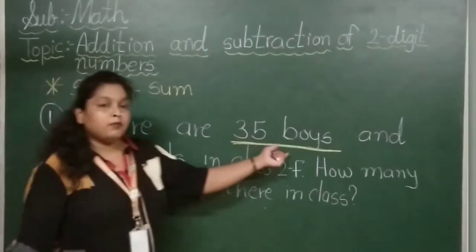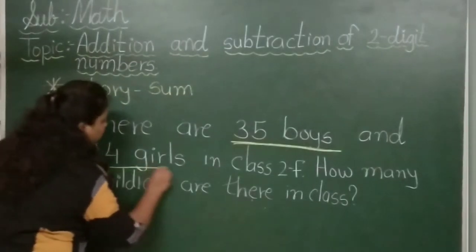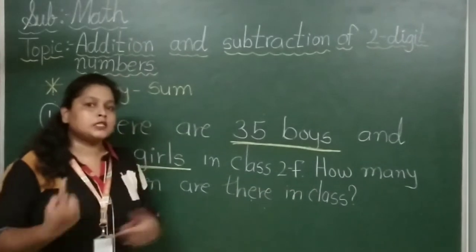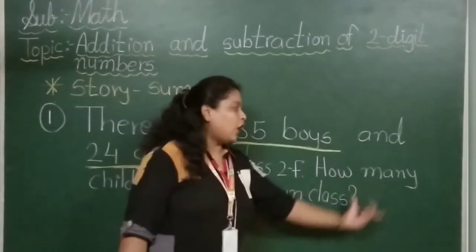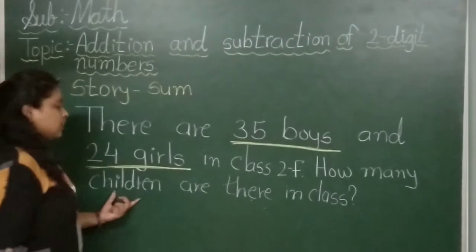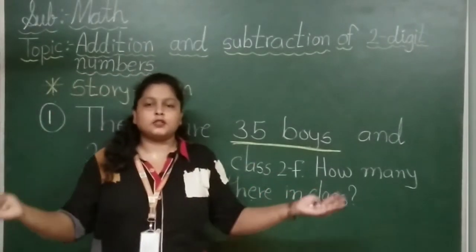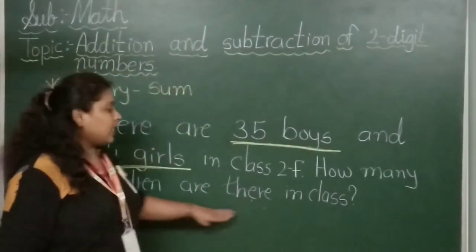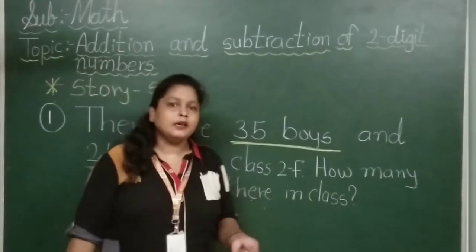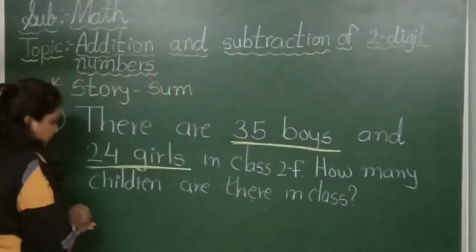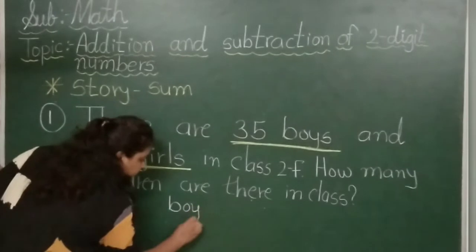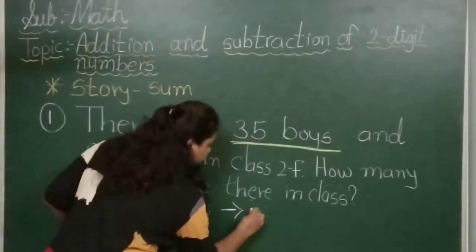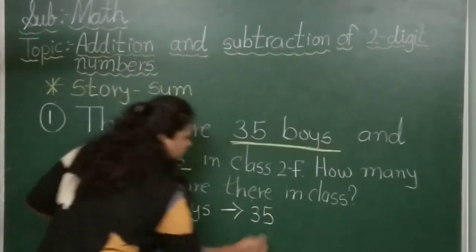There are 35 boys and how many girls? 24. Which class? 2F. Now, what's the question? The question is, how many children? Boys and girls together. So first we will write boys: 35.